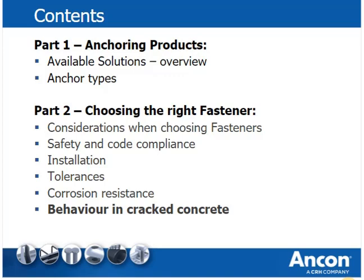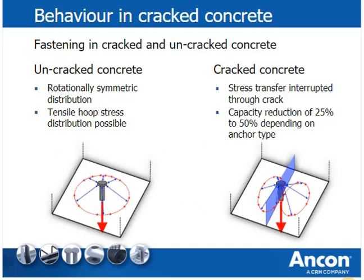Cracking in concrete has a significant influence on the capacity of anchors as it changes the load path significantly. When post-installed or cast-in anchors are installed in uncracked concrete, pressure forces act from the head of the anchor toward the concrete surface creating a rotationally symmetric distribution. Tensile hoop stresses in the concrete react to this pressure load, creating a ring of tension taken by the concrete's tensile capacity. When the concrete is cracked, transfer of tensile hoop stresses is interrupted and the load distribution changes. All types of anchors, including headed cast-in inserts, show a reduction in capacity when used in cracked concrete.